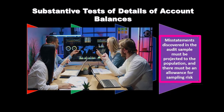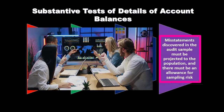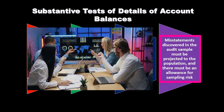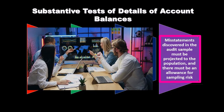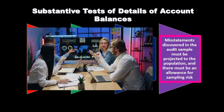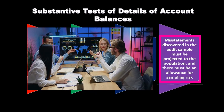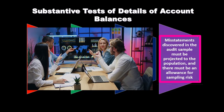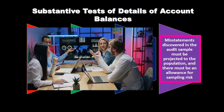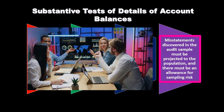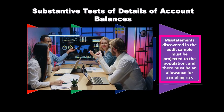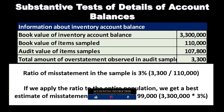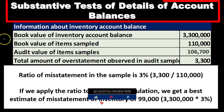Misstatements discovered in the audit sample must be projected to the population. Obviously, if we find a misstatement within the sample, we then project that to the population. And there must be an allowance for sampling risk.